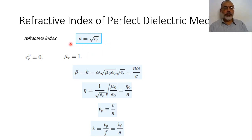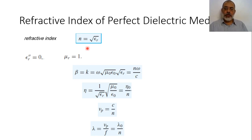The concept of the refractive index is commonly used in optics, where most people use n instead of the square root of epsilon_r — but both are equivalent to each other.